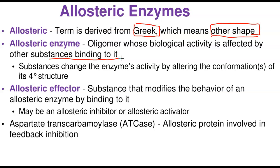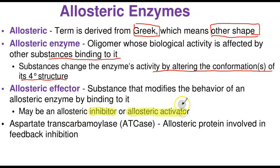Substances change the enzyme's activity by altering their conformational structure — specifically at the quaternary structure level. An allosteric effector is any substance that modifies the behavior of an allosteric enzyme. This effector can be an allosteric inhibitor or an allosteric activator. An inhibitor slows down the reaction; an activator promotes or facilitates the rate of the reaction.